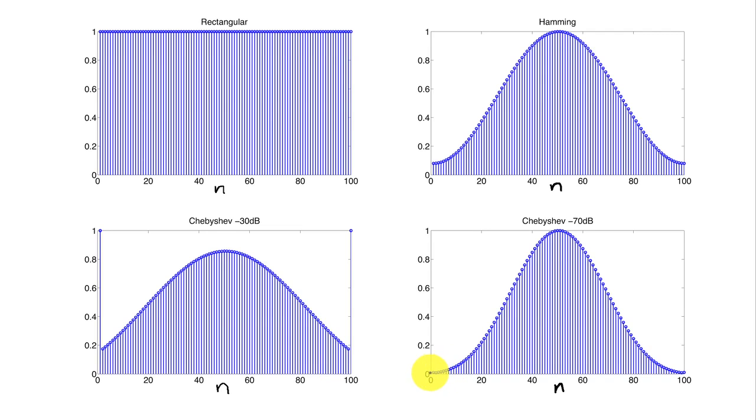But at minus 70 dB, you can see it turns on very gradually and turns off very gradually. Typically, the deeper the side lobes, the more gradual you're going to see the turn on and the turn off, and that's just because you're making it smoother in the time domain, which is reducing the high frequency content in the frequency domain.